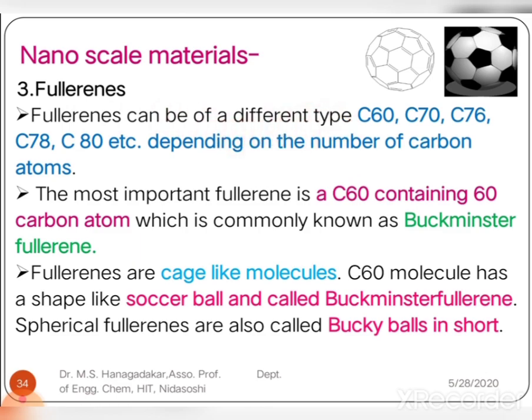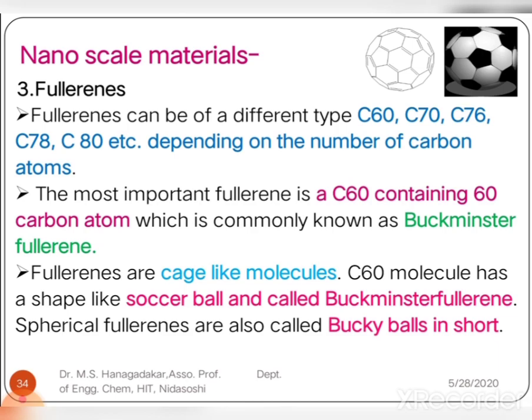Fullerenes can be of different types depending upon the number of carbon atoms present in a single molecule. They may be C60, C70, C76, C78, and C80 etc. All fullerene molecules contain an even number of carbon atoms. The most important fullerene is C60, commonly known as Buckminsterfullerene, because the scientist who expressed the synthesis of C60 fullerene first time was Buckminster.